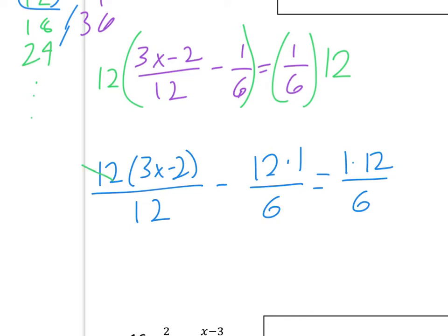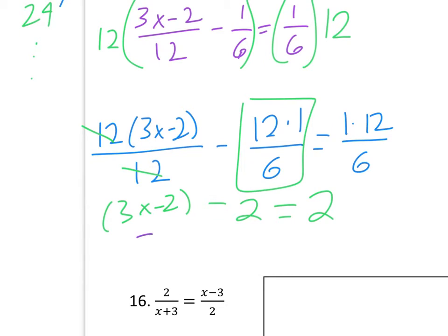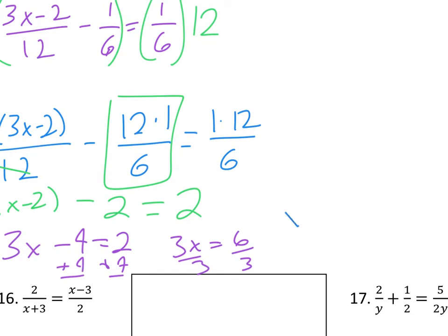One of the longer ways I can draw this out is to show actually multiplying the 12 by the 3x minus 2 over the 12, and then the 12 times the 1 over the 6, and the 1 times the 12 over the 6. When we have this situation, the 12s cancel each other out, so we're left with 3x minus 2. In the next piece, 12 times 1 would be 12, but then 12 divided by 6 is 2, and we get the same thing on the other side.